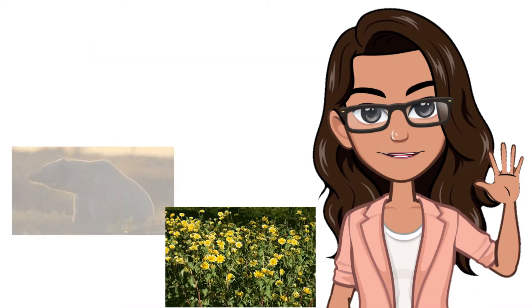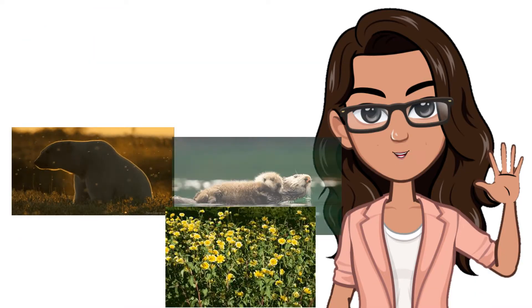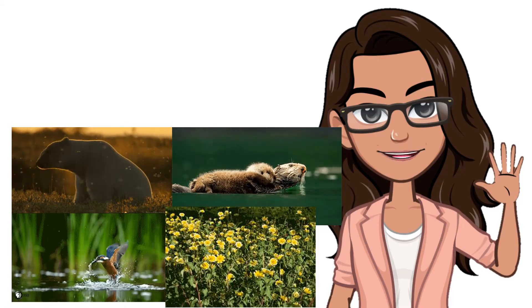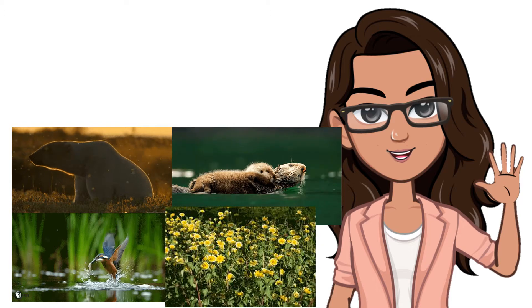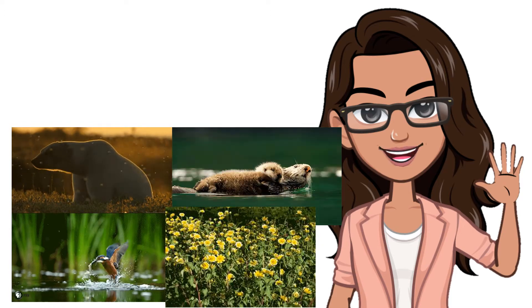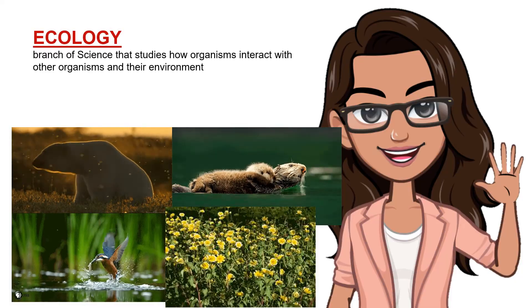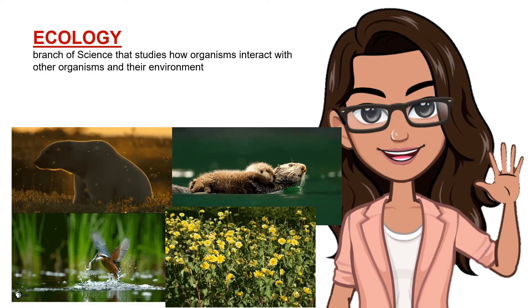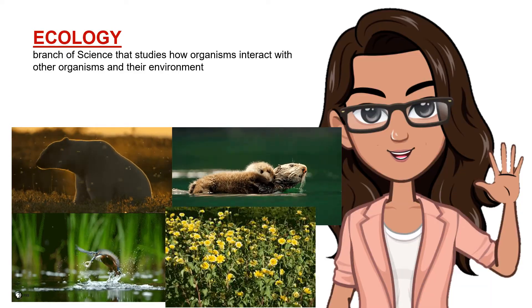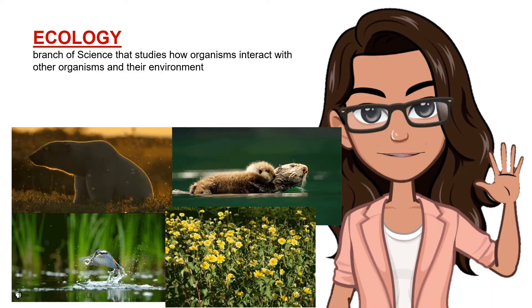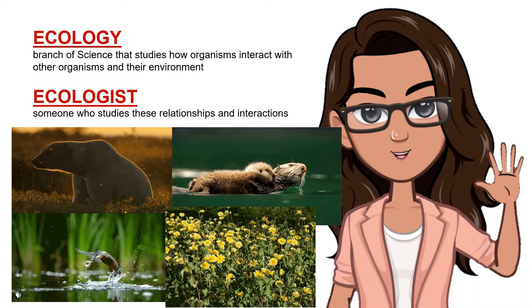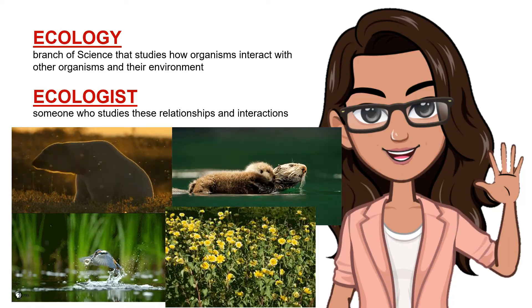Every living organism on Earth depends on and interacts with other living and non-living things to stay alive. Organisms depend on other organisms for food, for example, and also depend on their environment for protection and a place to stay. The particular branch of science that studies how organisms interact with other organisms and their environment is called ecology. Someone who studies these relationships and interactions is called an ecologist.